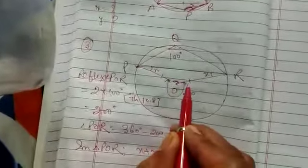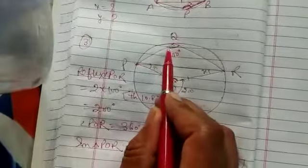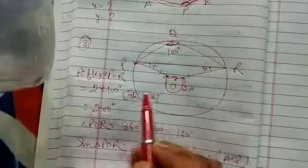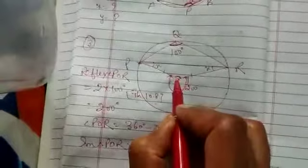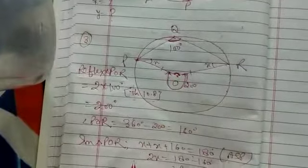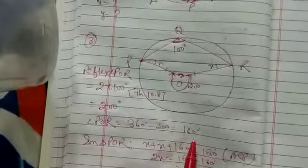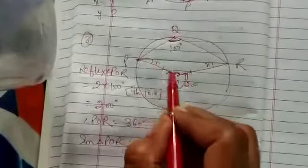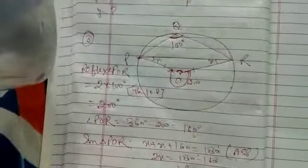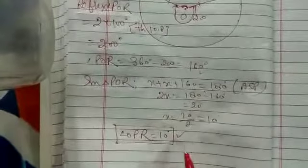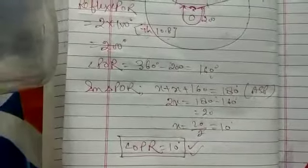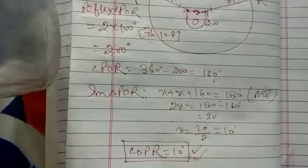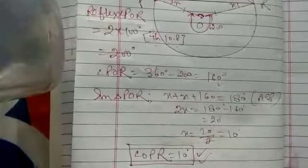उसके बाद, आप लोगों ने question number 3 पूछा था। उस figure में remaining part पर बना angle 100° है, तो theorem 10.8 से center पर बना angle POQ = 2 × 100 = 200 degrees। अंदर वाला angle POQ = 360 − 200 = 160 degrees। यह isosceles triangle है तो दोनों angles equal होंगे: x + x + 160 = 180, इसे solve करने पर x = 10 degrees। तो इस तरीके से यह question complete होगा। जो problem आती हैं पूछते रहिए। Thank you।